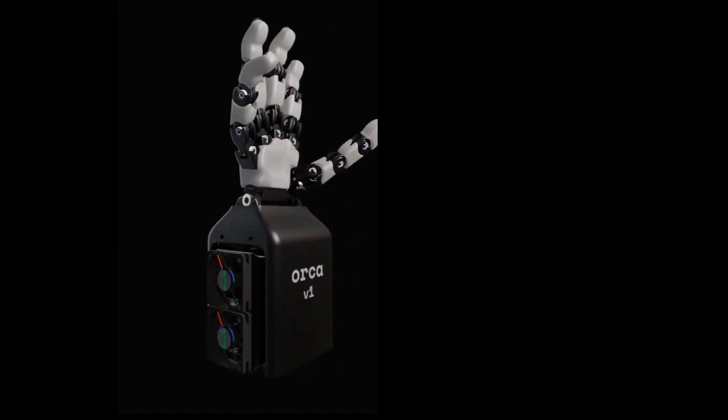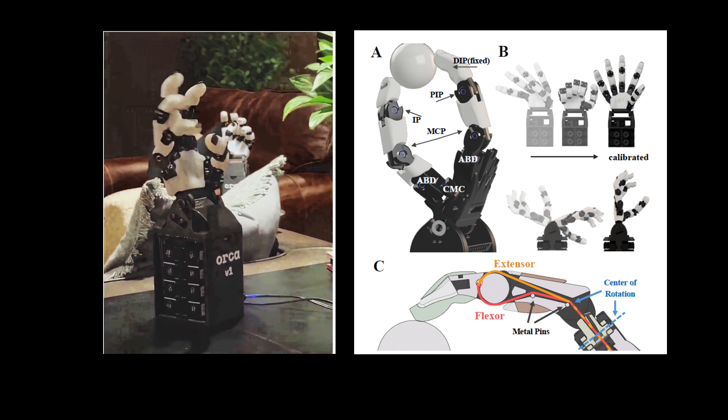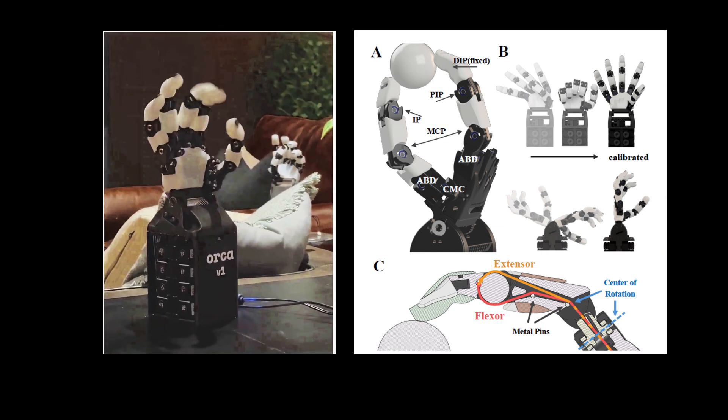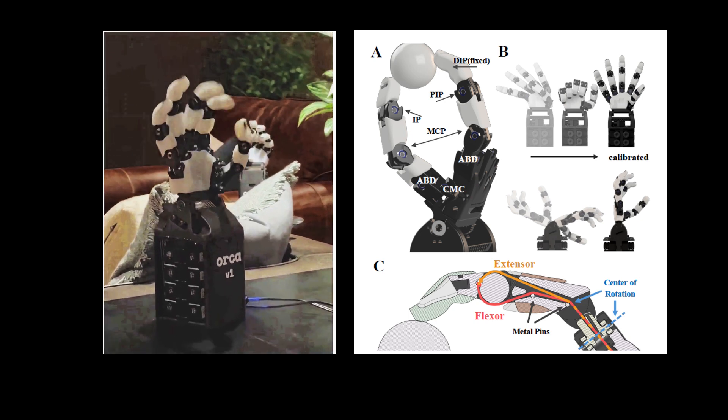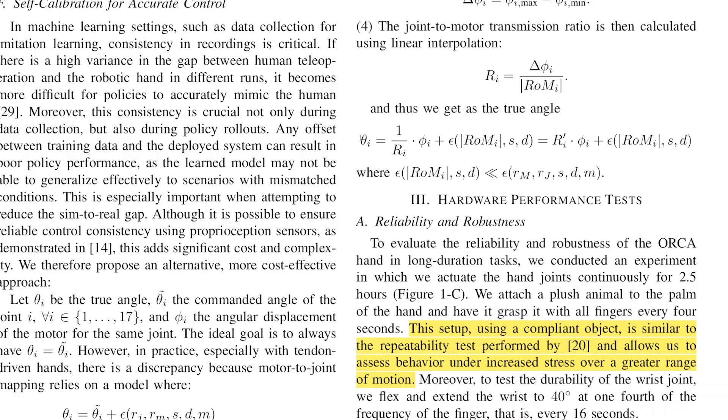The third is tendon routing at the distal interphalangeal joints. One of the toughest challenges in tendon-driven hands is that proximal and distal joints are often mechanically coupled, making control difficult. Orca's solution is to route the DIP tendon through the center of rotation of the proximal joint. This clever geometry effectively decouples joint motions, creating a near-linear mapping between motor angles and joint angles. The result: lower control complexity and higher accuracy.